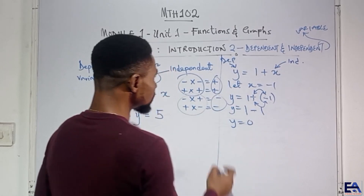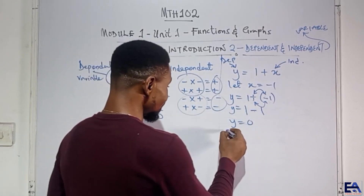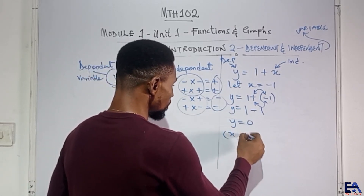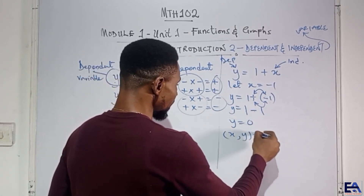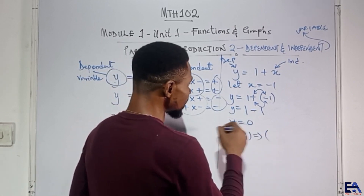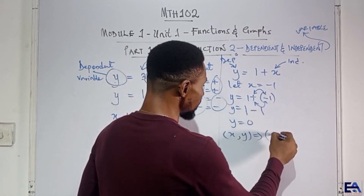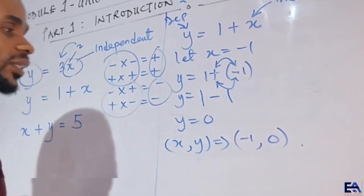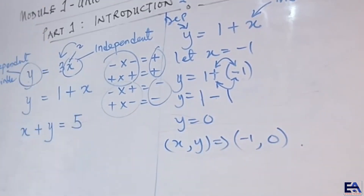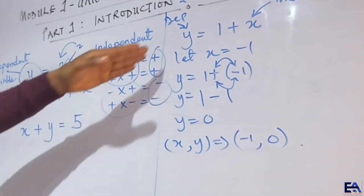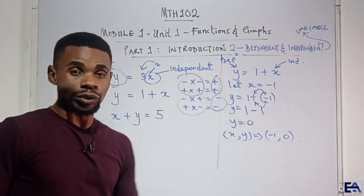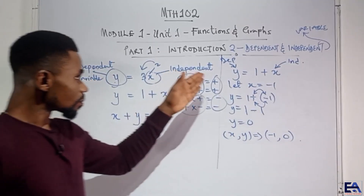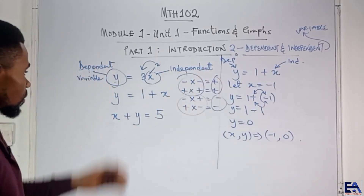So if you compare with the ordered pair (x, y), it means that when x is minus 1, y is 0 for this particular equation. That is just how it goes.